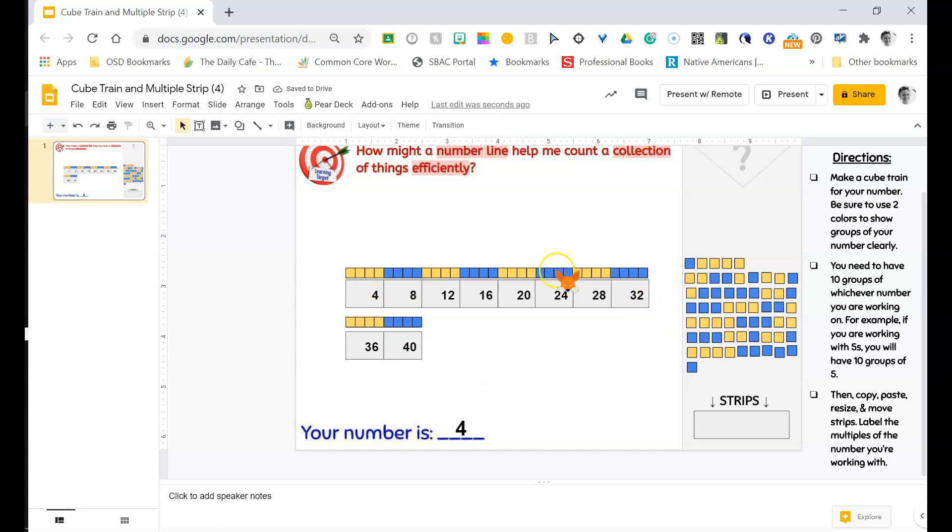So I now know that the total number of cubes that I have in my train is 40. Another way that I could think about this is that I could represent this with an equation.